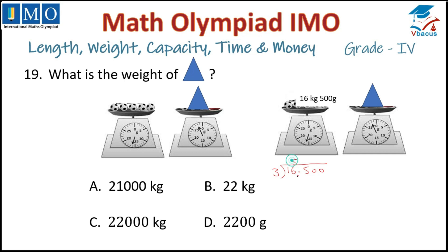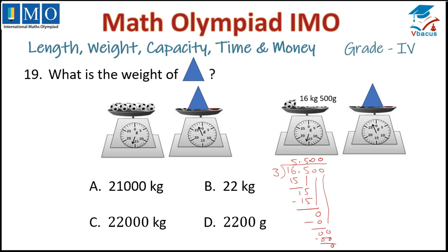Dividing: 3 fives are 15, insert decimal, drop down 5, 3 fives are 15 again, then drop down 0. So 1 ball is equal to 5 kg 500 grams. The value of 3 balls is 16 kg 500 grams, and the value of 1 ball is 5 kg 500 grams.